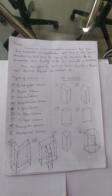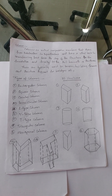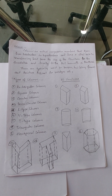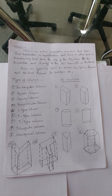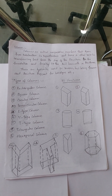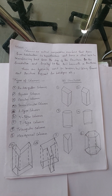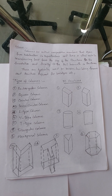So what is a column? A column is a vertical compression member which plays an important role in transferring load from the top of the structure to the foundation. These are mainly used in trusses, buildings, and structural support for bridges, etc.